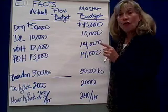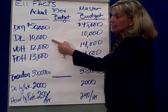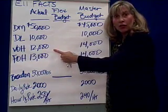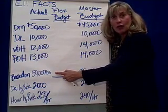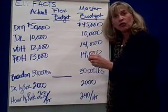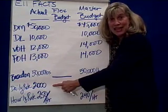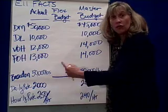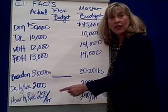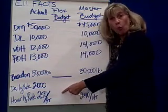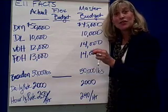For a month, this blueberry processing plant spent $50,000 on blueberries, $10,000 for direct labor, $12,000 for variable overhead, and $13,000 for fixed overhead, and they processed 50,000 pounds of blueberries. Their non-financial performance measures: the daily rate of processing was 2,000 pounds a day and they worked 25 days — 2,000 times 25 equals 50,000 pounds. Their hourly rate of production was on average 250 pounds per hour.